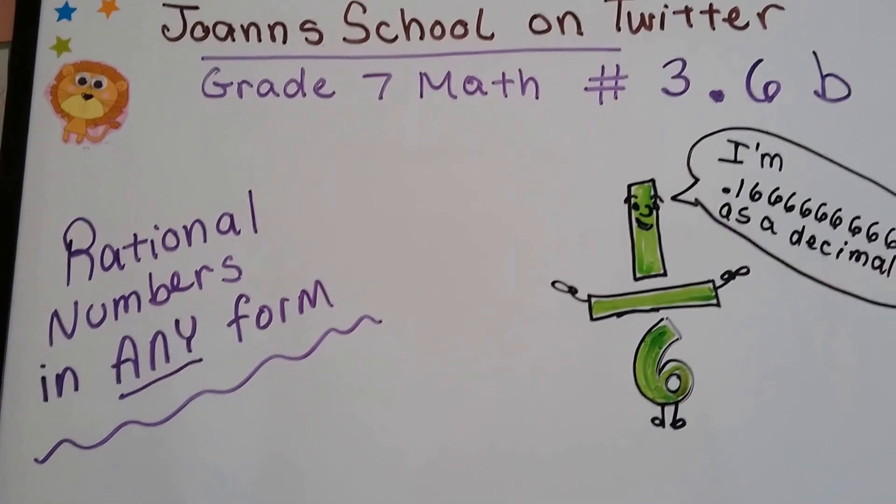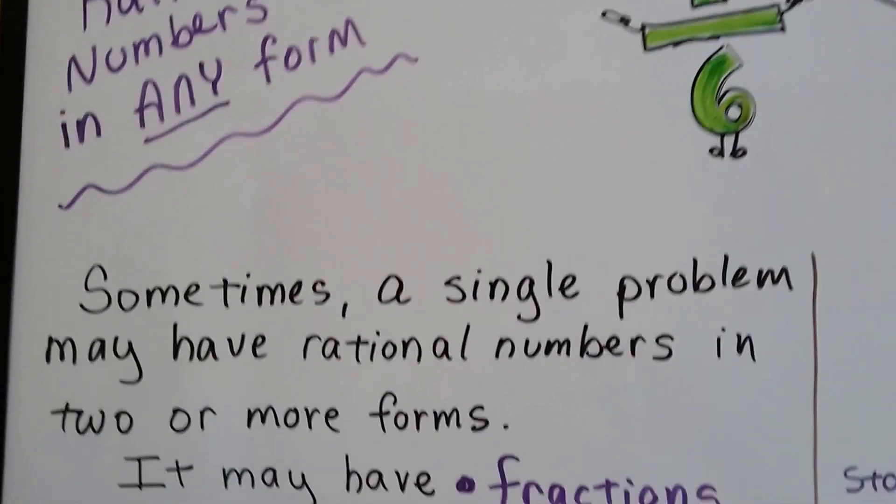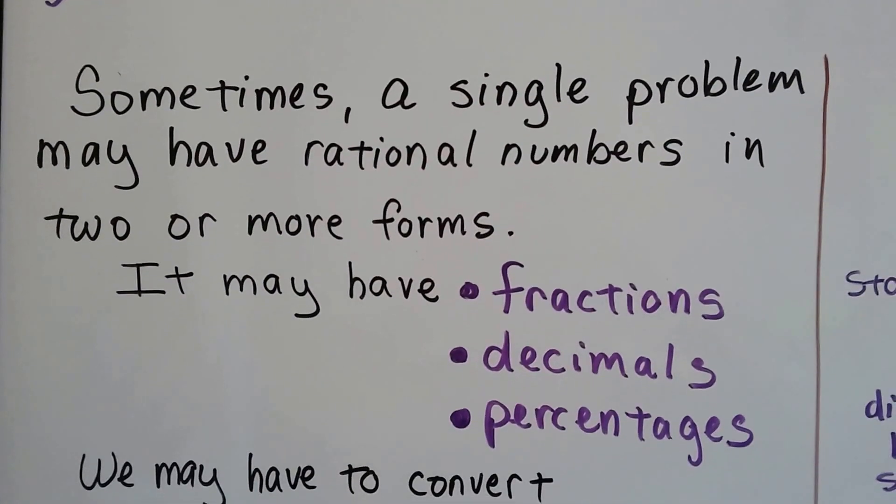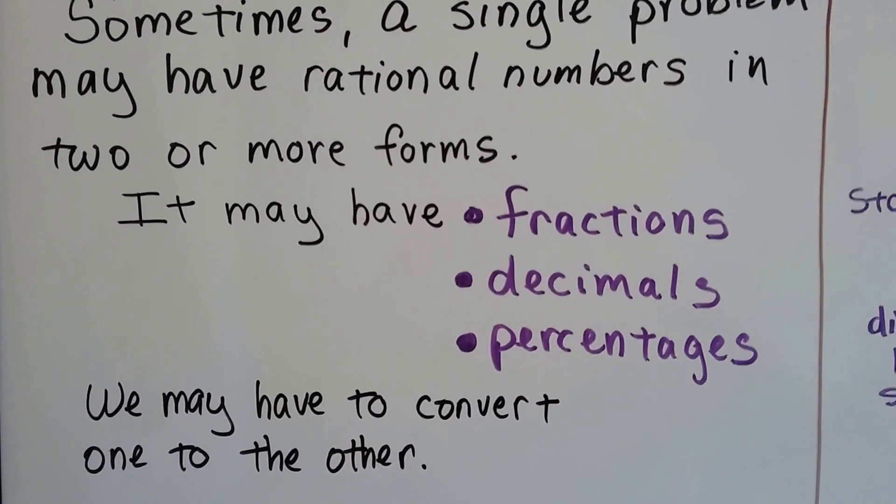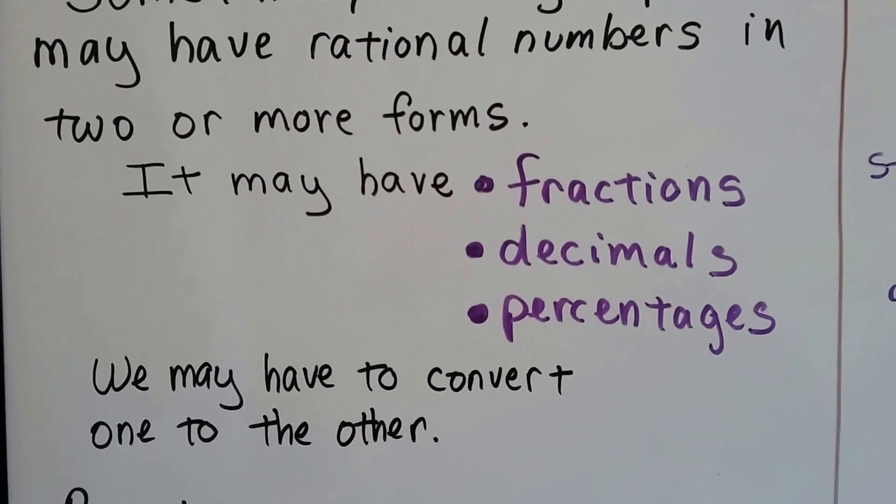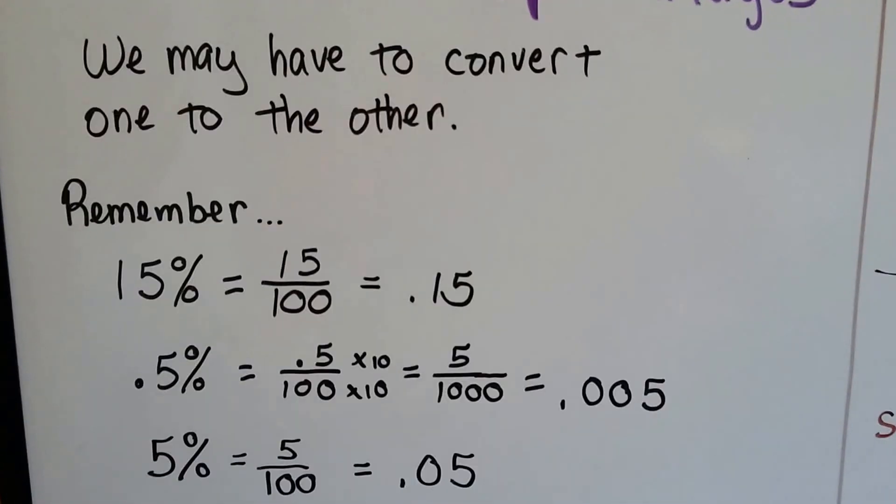Grade 7 math number 3.6b. Rational numbers in any form. Sometimes a single problem may have rational numbers in two or more forms. It may have fractions, decimals, percentages, all in one problem. We have to convert one to the other. That way we can solve it.